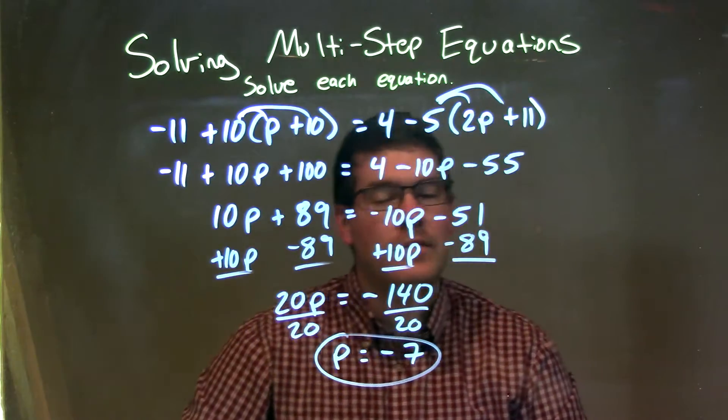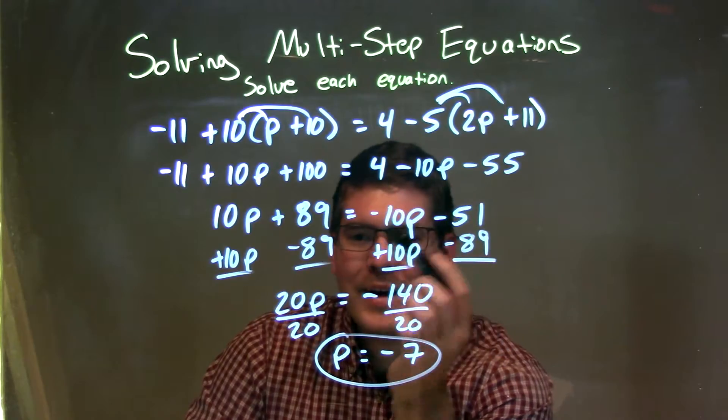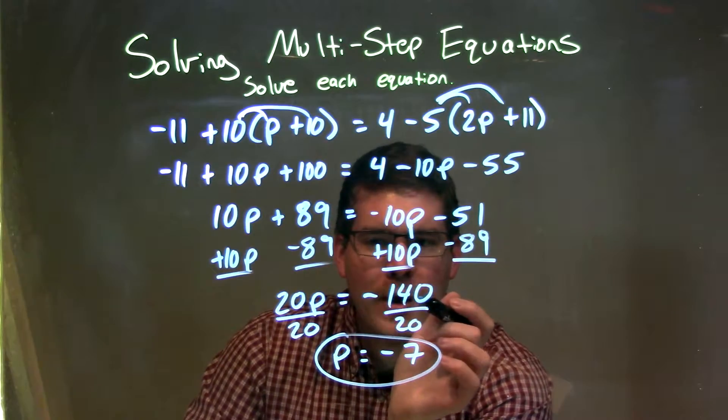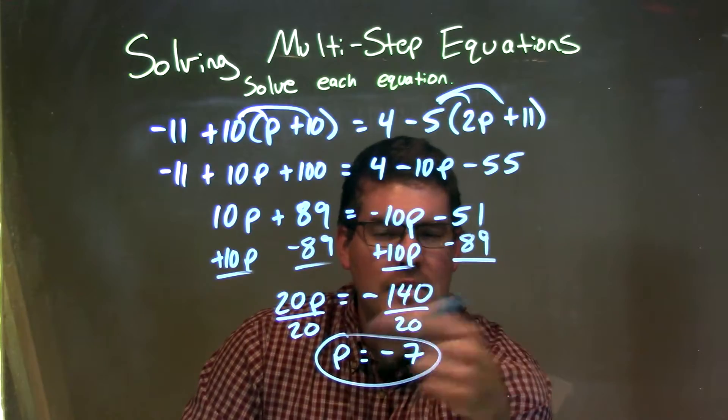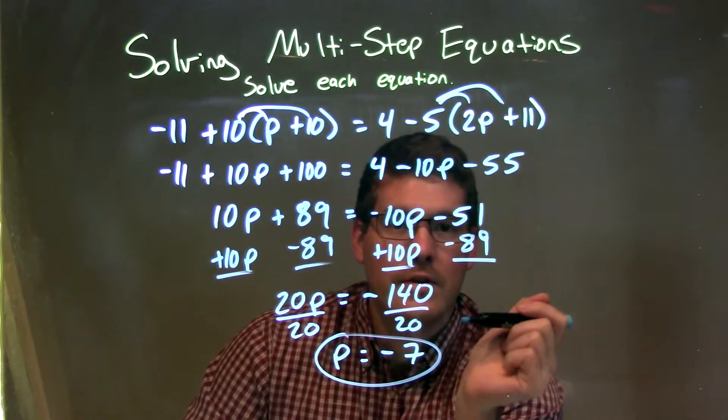And on the right, negative 10p minus 51. I then bring all variables to the left and numbers to the right, giving me 20p on the left and negative 140 on the right. I then divide both sides by 20, leaving p isolated by itself. My final answer is p equals negative 7.